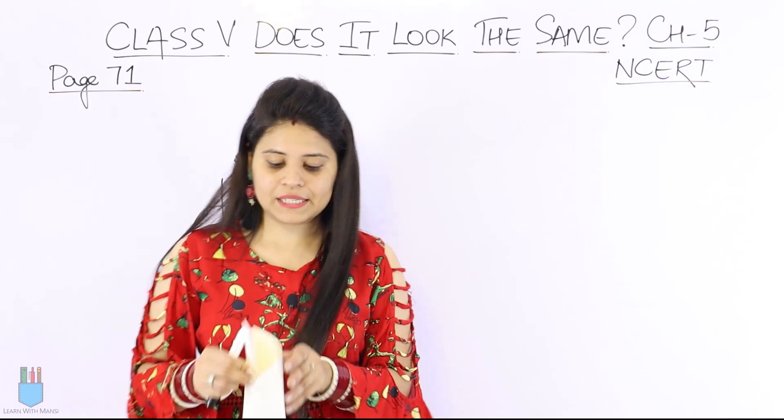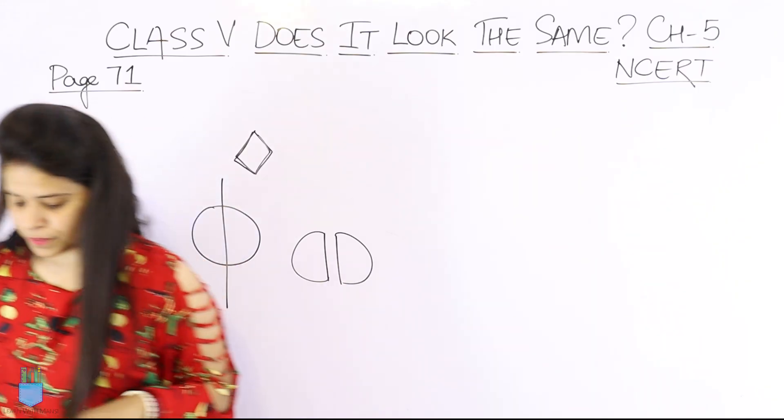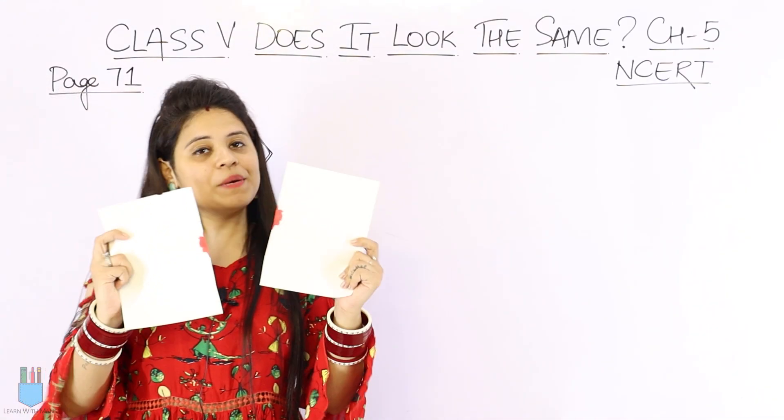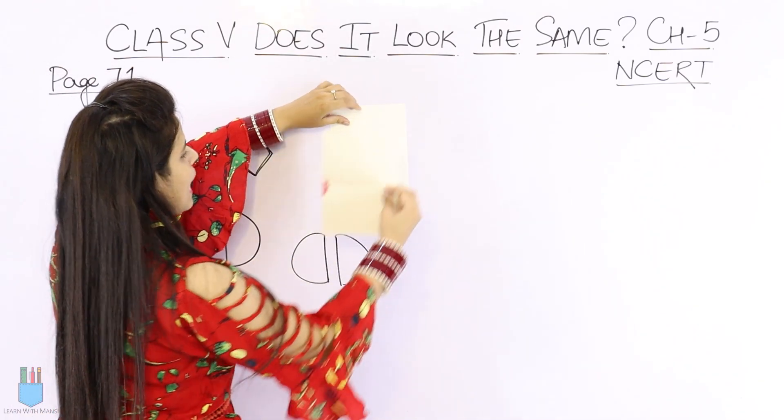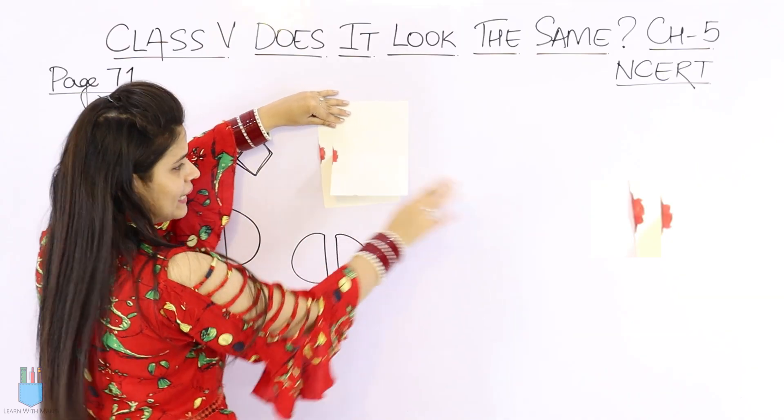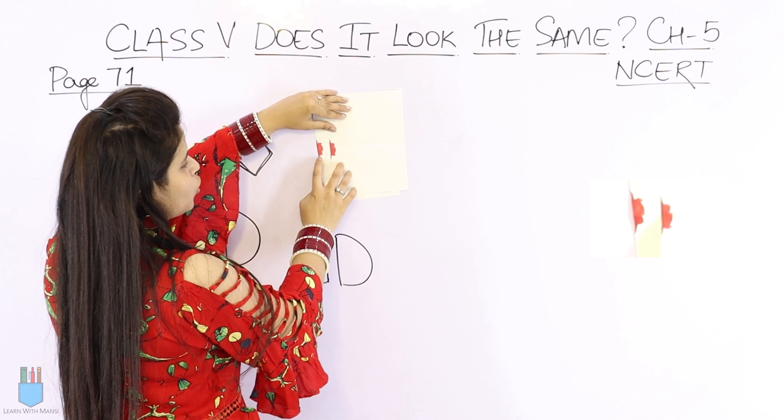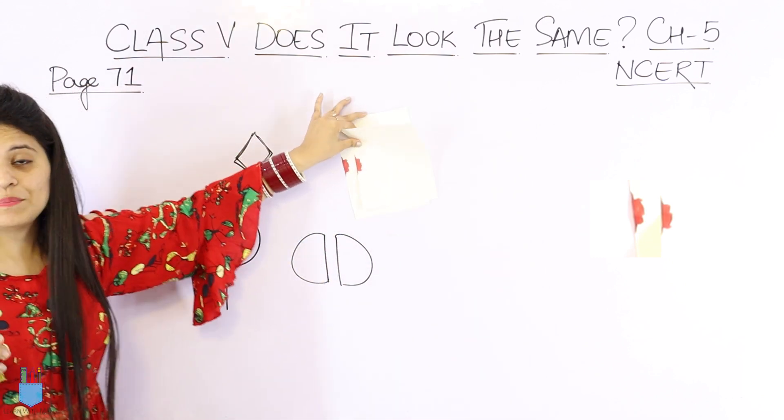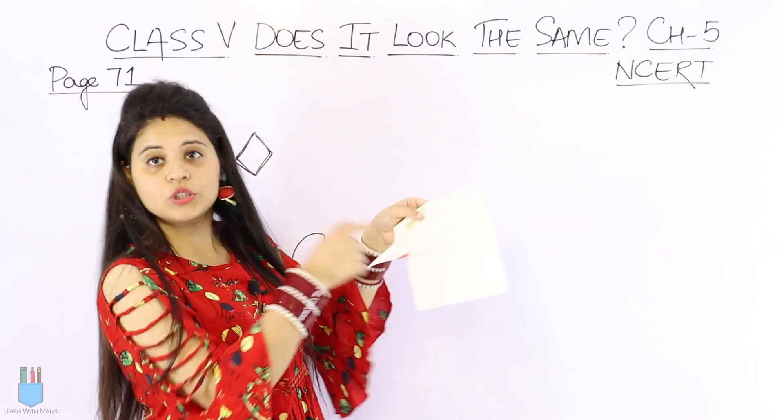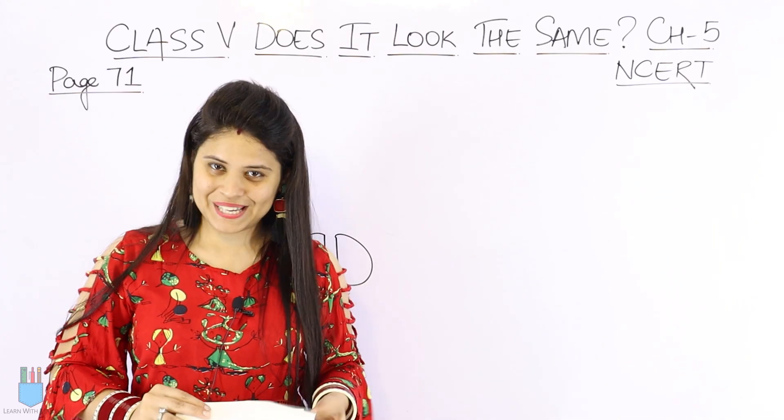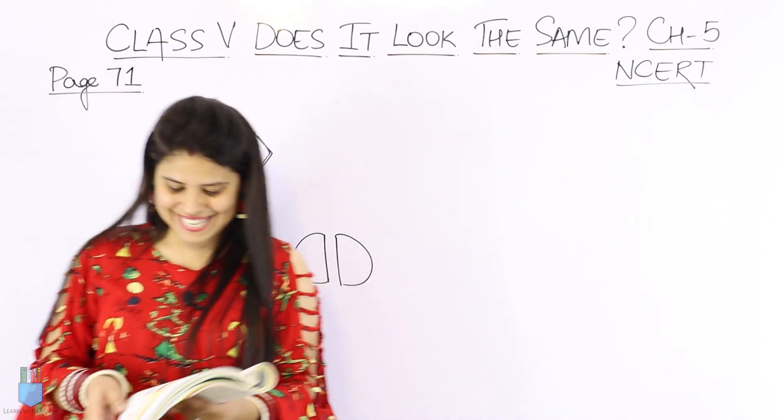Now let's talk about this pattern. If I cut this pattern from the middle, let me quickly do that for you. I have cut it from where we have folded. Now what you will observe is I have these two. I will insert it here so don't worry. These two are exactly the same. That means we can say this is a mirror half. So this is our page number 71. Let's quickly move to the next page.